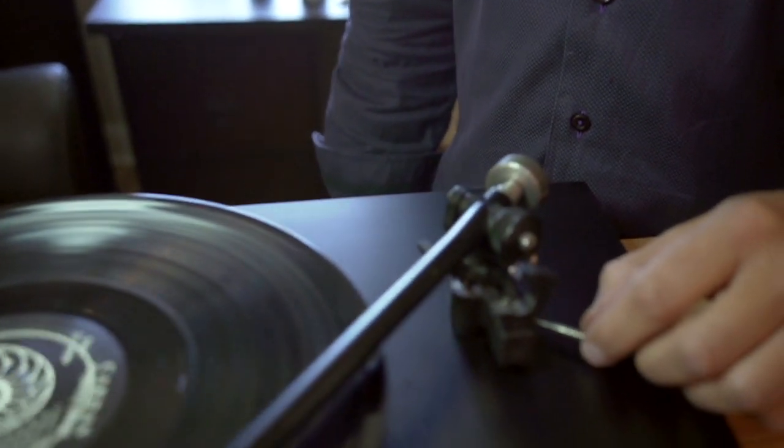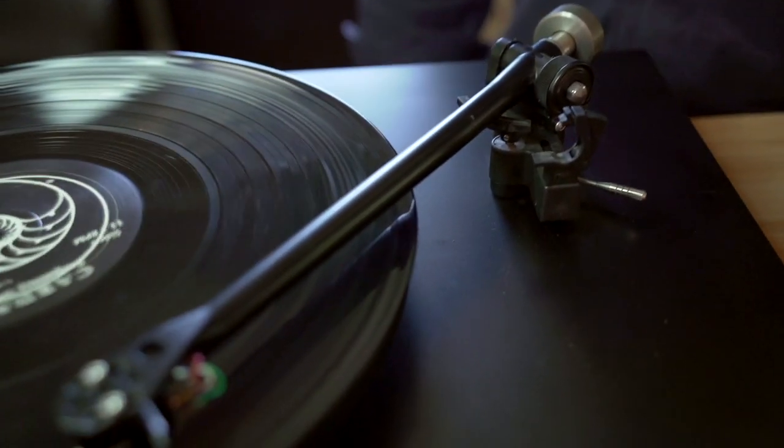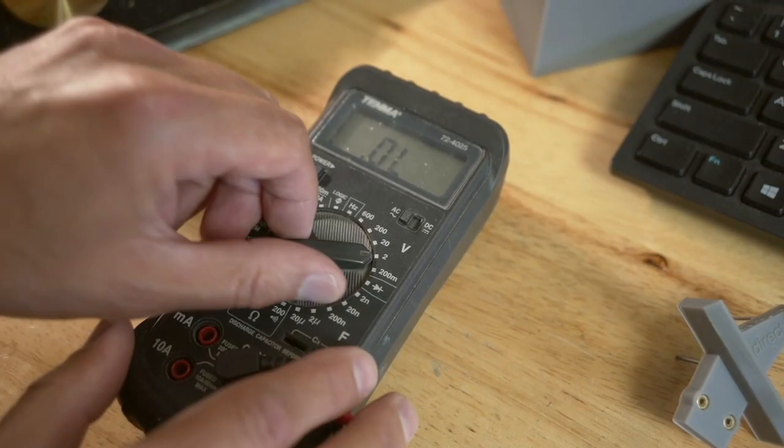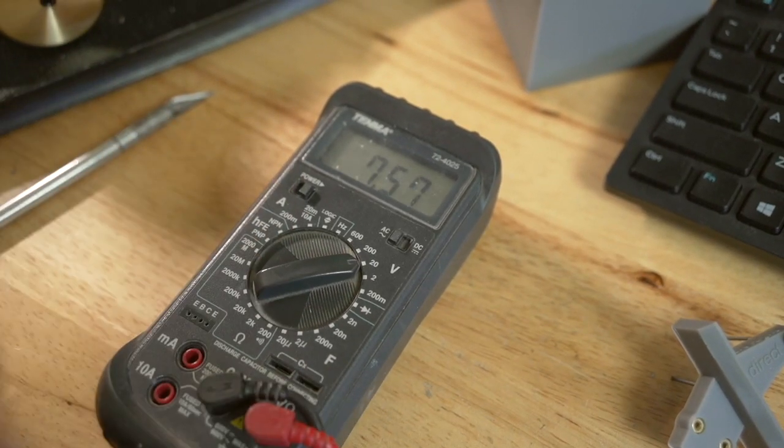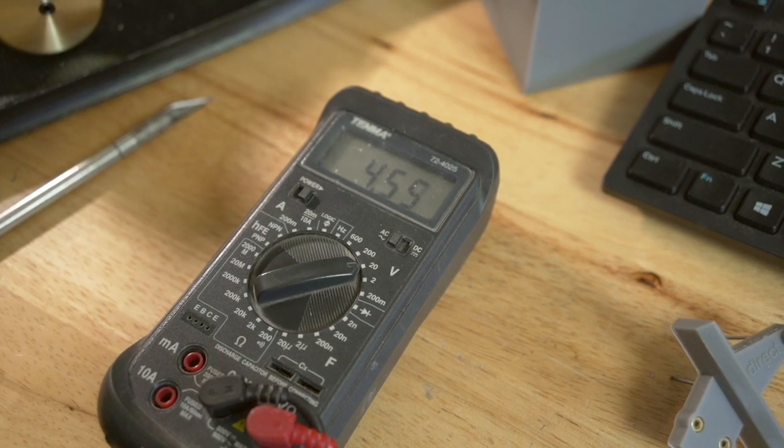So the last major step is to measure your azimuth electrically. Even if your tone arm does not have an azimuth adjustment mechanism, do this measurement. If you find that your cartridge is in need of a change on the azimuth angle, the WALL-E fulcrum will help you do that.